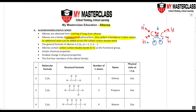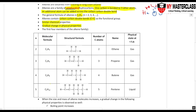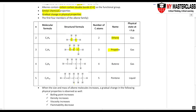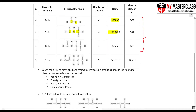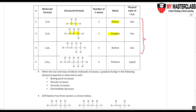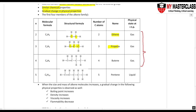The general formula of alkenes is CnH2n, where n is the number of carbon atoms. Because they share the carbon-carbon double bond functional group, they have similar chemical properties and show a gradual change in physical properties. The first four members of the alkene family are shown: two carbons is ethene, three carbons is propene, and so on. The first four alkenes are gases; from the fifth carbon onwards, size and mass increase, leading to stronger intermolecular forces of attraction, higher melting and boiling points, and they become liquids.